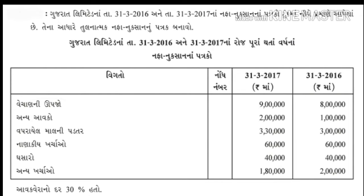મિત્રો, ગયા લેક્ચરમાં તુલનાત્મક નફાનુકશાનનું પત્રક તૈયાર કરવાં અંગેના આપણે બે દાખલાઓ ગણ્યા. આજે આપણે આગળ ત્રીજો દાખલો જોઈએ. ગુજરાત લિમિટેડના તારીખ 31/3/2016 અને તારીખ 31/3/2017ના રોજ પૂરા થતા વર્ષના નફાનુકશાનના પત્રકો - એ બે વર્ષના નુકશાનના પત્રકો.